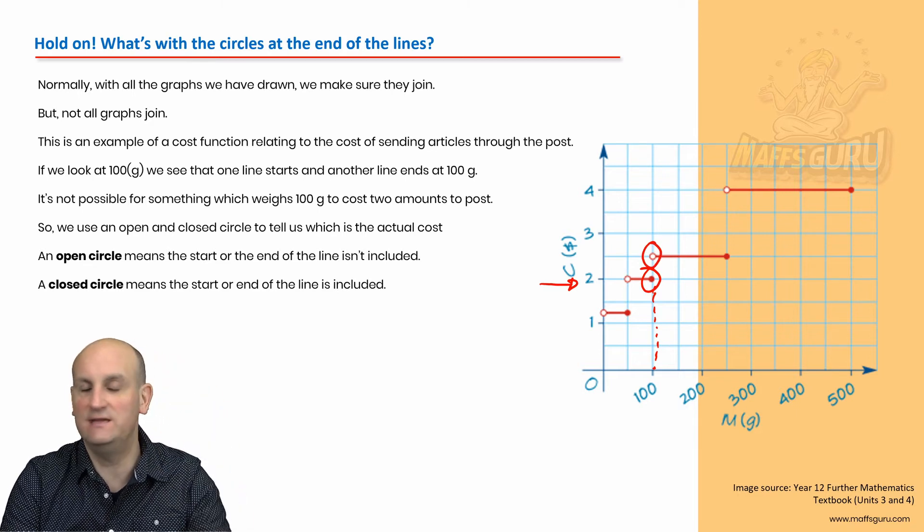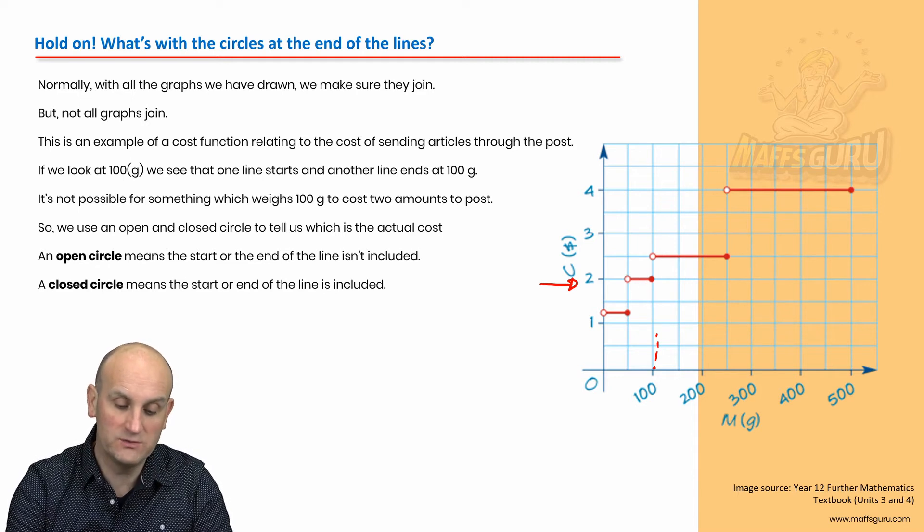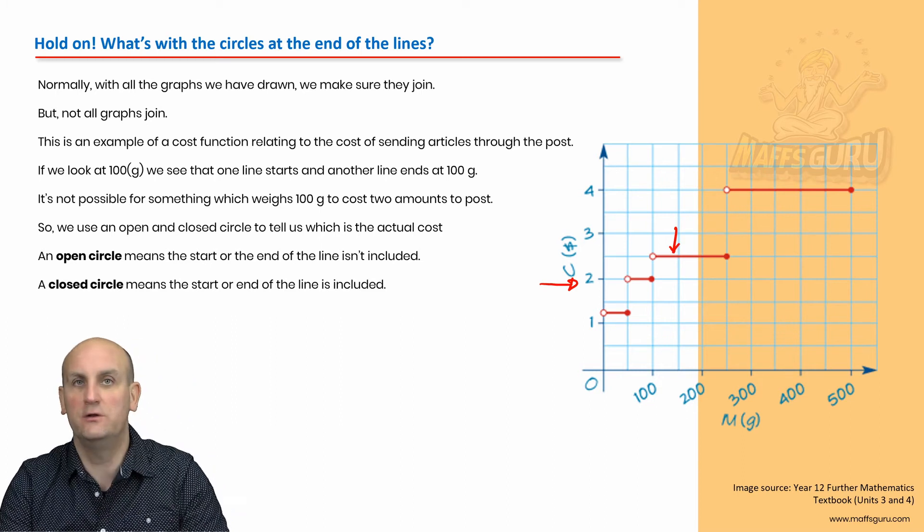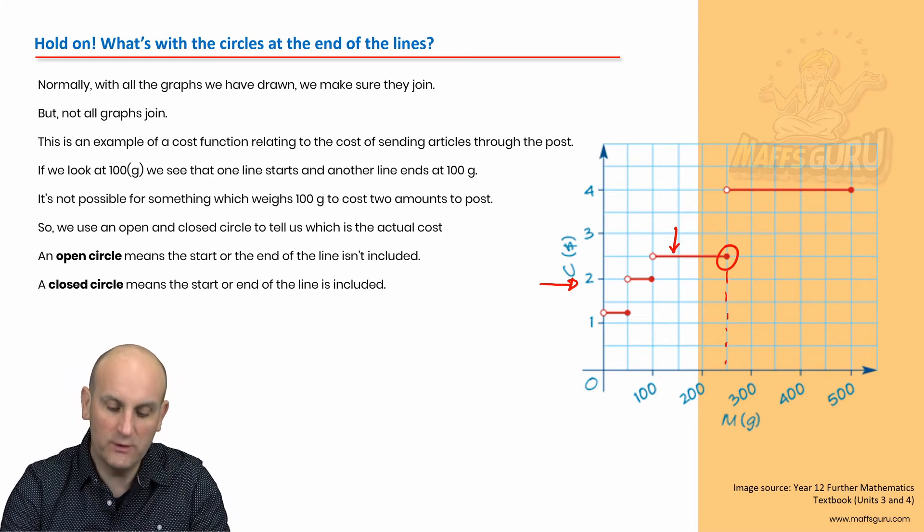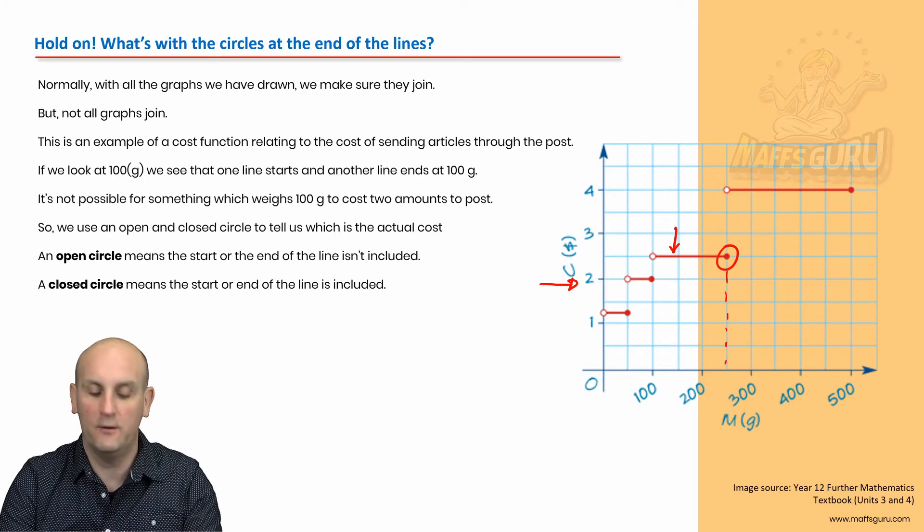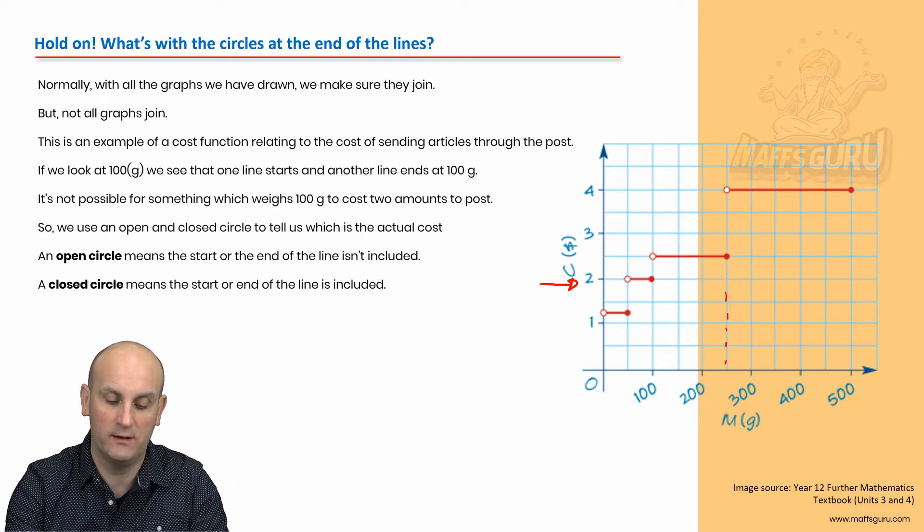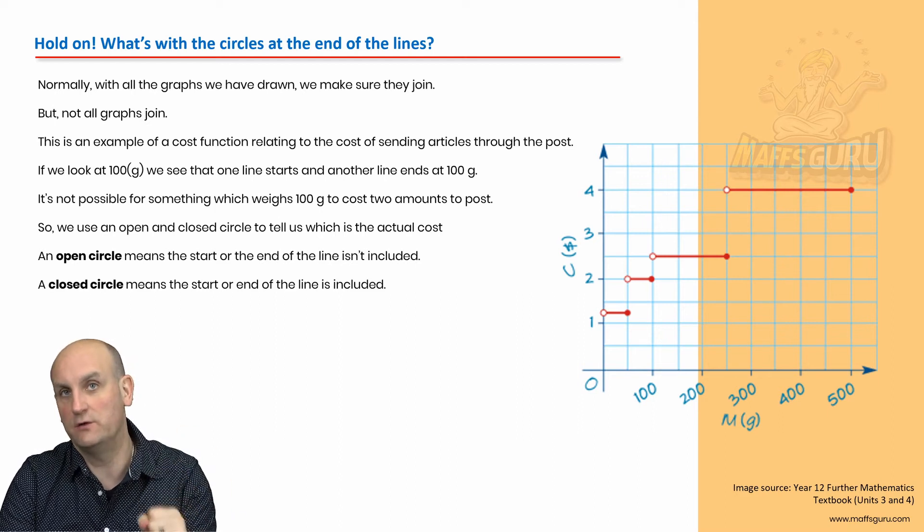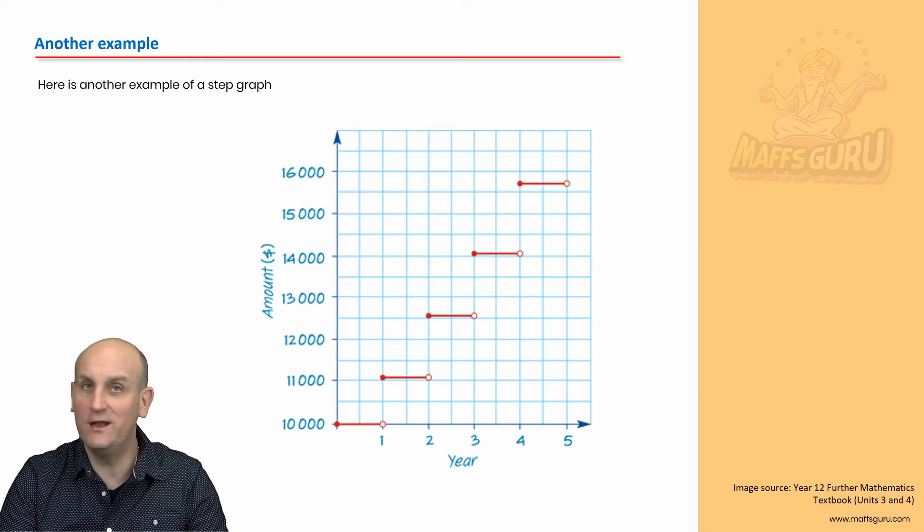Because that open circle says, nah, not here. Not here. If my package was 101 grams, then I start being charged $2.50. All the way up to this here, which is 250 grams. So, 250 grams, up to and including that value, I'll pay $2.50. I won't be paying $4.00. So, when you draw these step line graphs, you must make sure that you put the open and closed circles in the right places. But I suppose the question is, how do you know where they are?